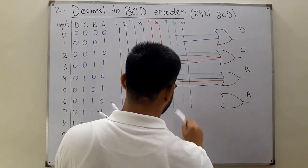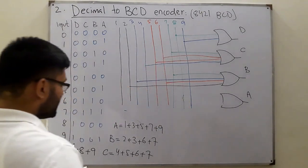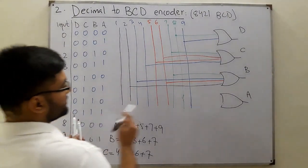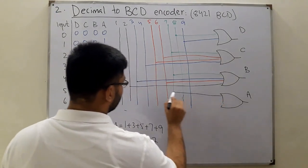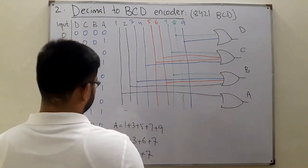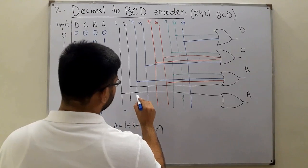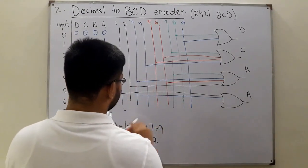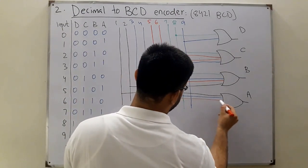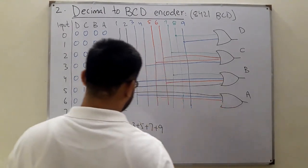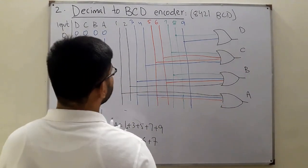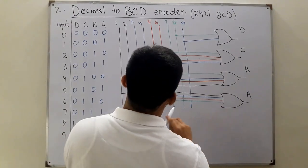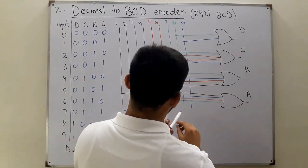For A you have one, three, five, seven, and nine - one in black, three in blue, five and seven in green, and nine in blue.